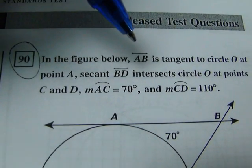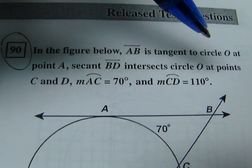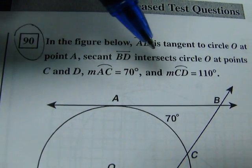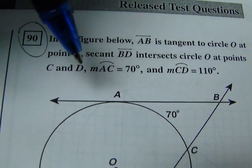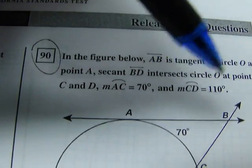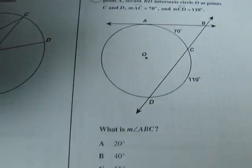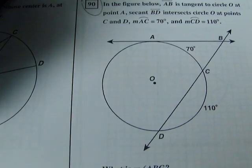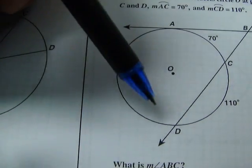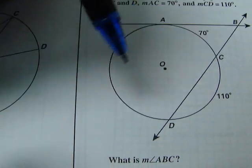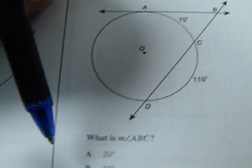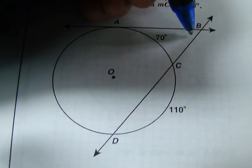In the figure below, line AB is tangent to circle O at point A. Secant BD intersects O at points C and D. Measure of arc AC equals 70 degrees. Measure of arc CD equals 110. Okay, the nice thing about this problem is that they tell it to you in words, but they also show it to you in the diagram. Let's see. If only we knew the measure of this arc, then we could do arc minus arc divided by 2 equals the angle. Right? Because we're trying to find the measure of angle ABC. We're trying to figure out this.